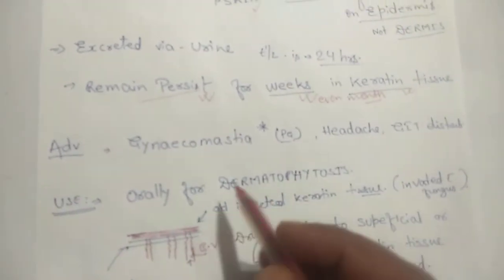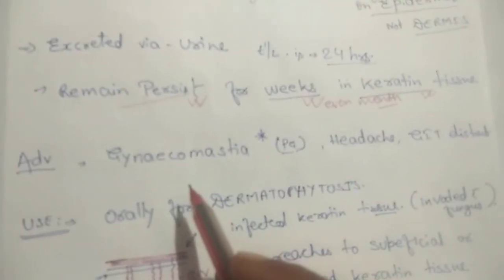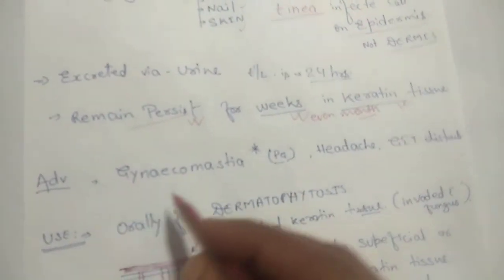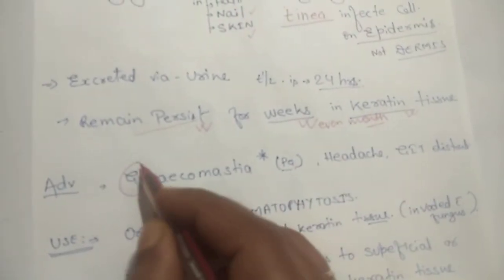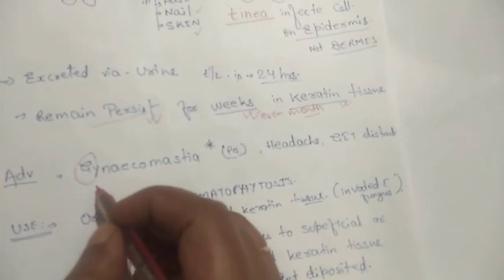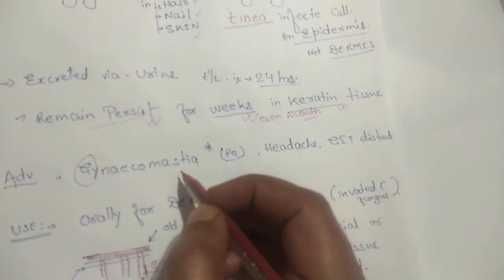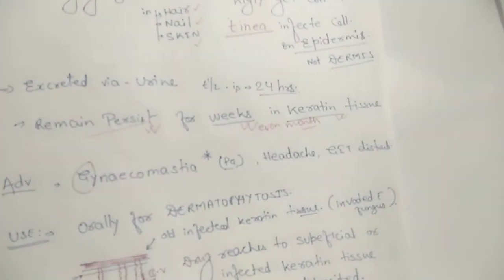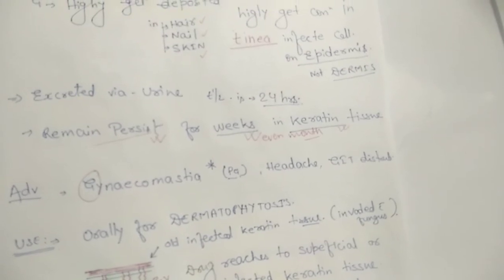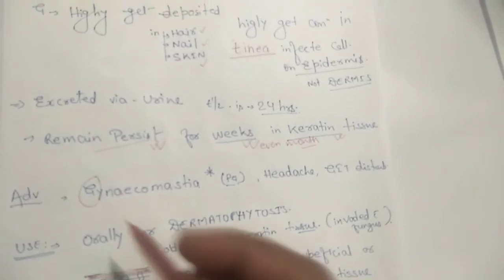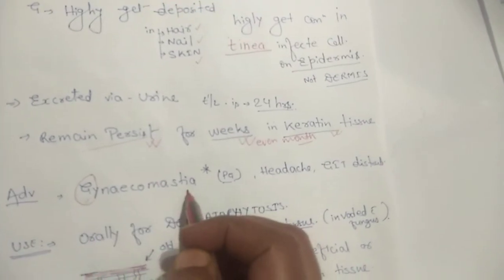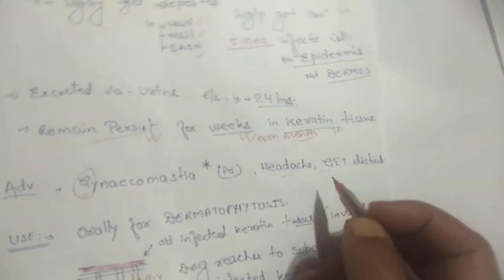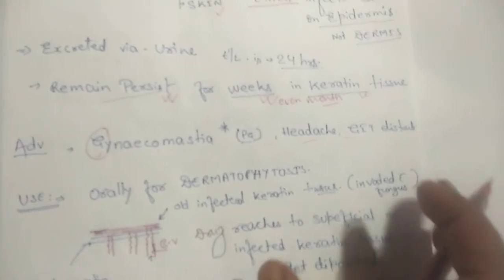The adverse effects: it is not most common, but one important adverse effect is gynecomastia, which is usually asked in your PG examination. G for griseofulvin and G for gynecomastia. Gynecomastia means the appearance of breast tissue in males. Other adverse effects include headache and GIT disturbances such as nausea, vomiting, and diarrhea.